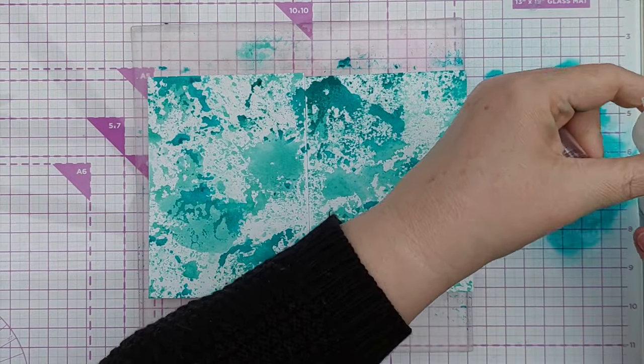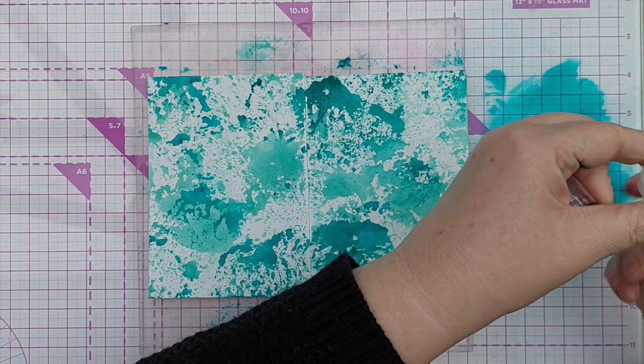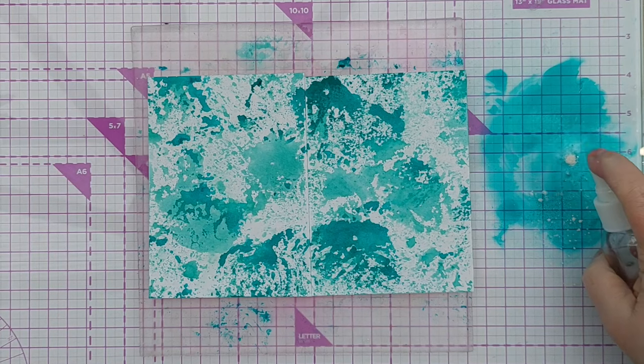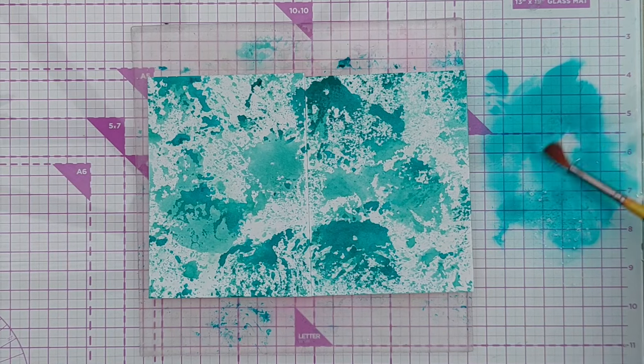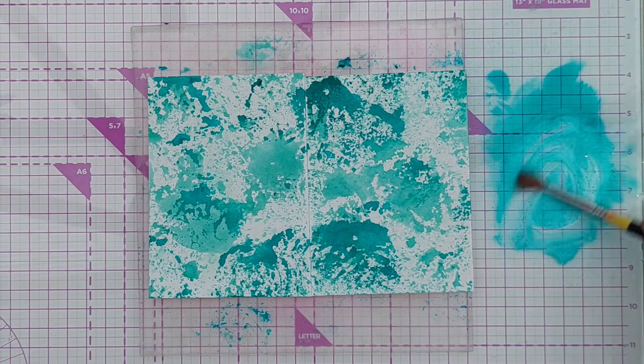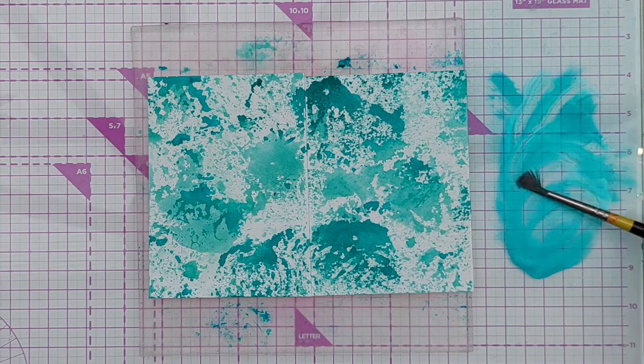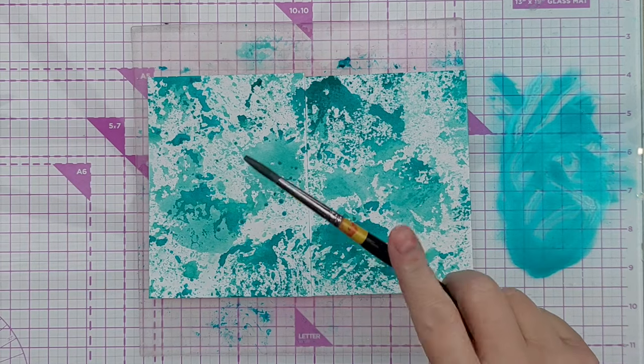Once that was dry I brought out the Cosmic Shimmer Pixie Dust, it's a white one, and added it to the leftover ink, mixed in with a bit more water and spattered it on, and that gave me some lovely shiny shimmery splatters on top of my colored ink smushing.